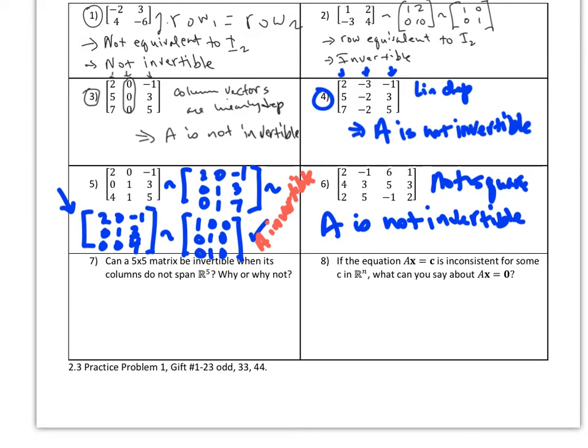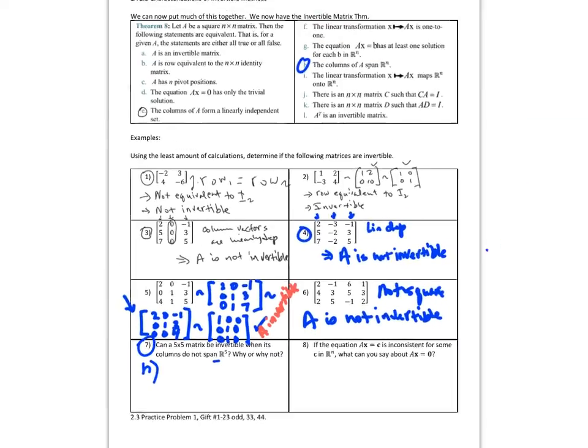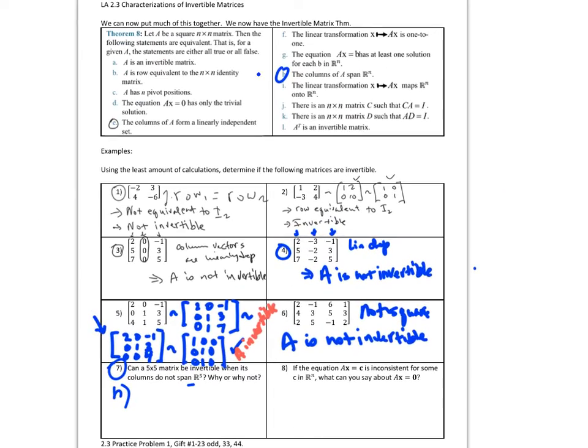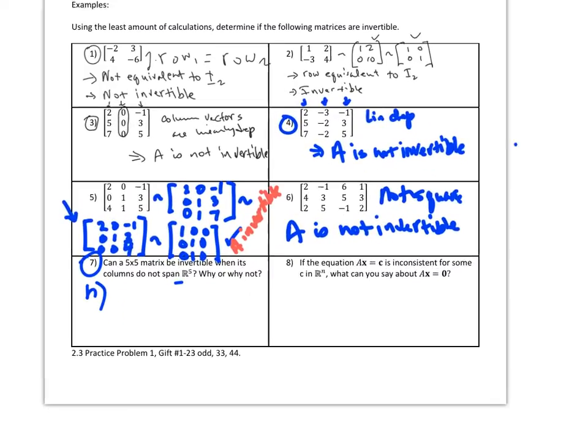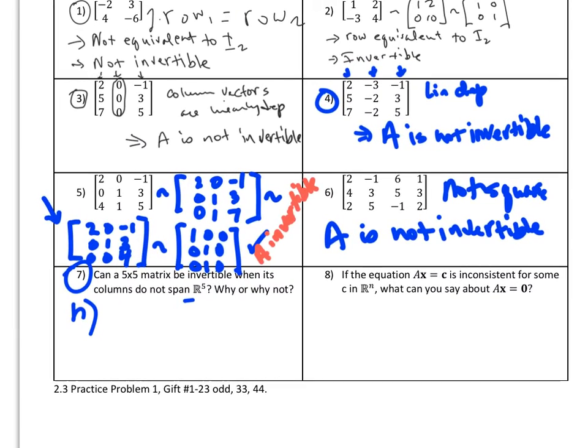True or false: Can a 5 by 5 matrix be invertible when its columns do not span R⁵? Why or why not? Look at condition H above. Columns of A span Rⁿ. If they don't span Rⁿ, then we don't have an invertible matrix. So A is not invertible.